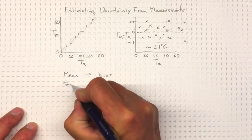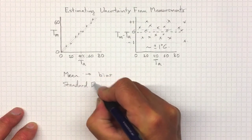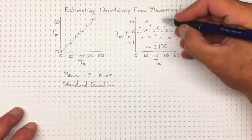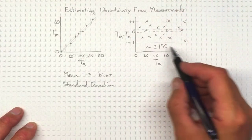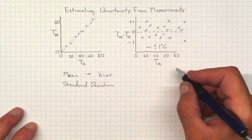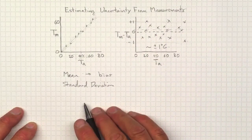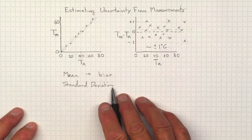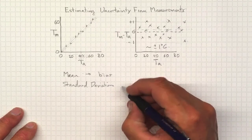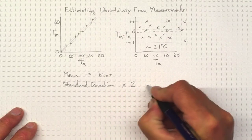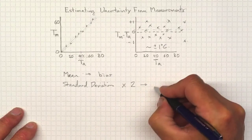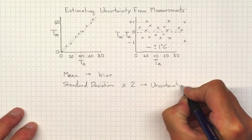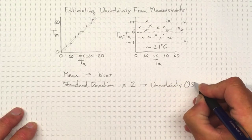Standard deviation tells me something about the spread in the data. How much does it spread around the mean? And the bigger the standard deviation, the larger my uncertainty. And in fact, if I have a Gaussian distribution, and we're going to assume that usually,